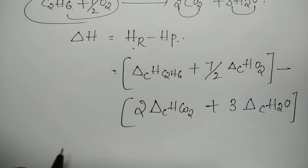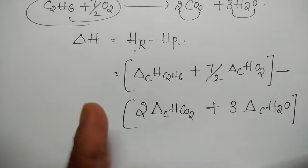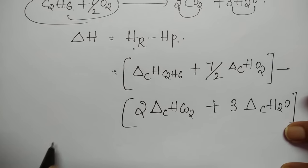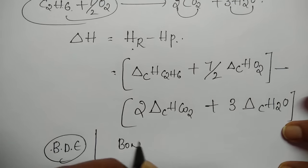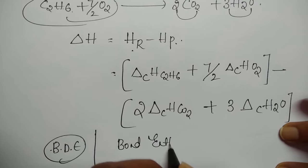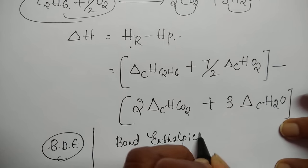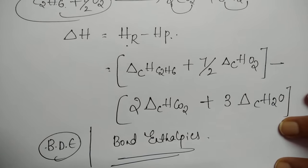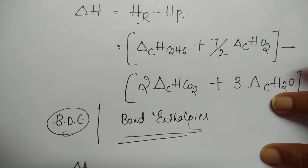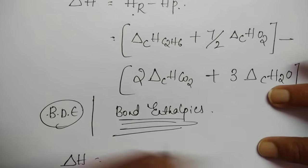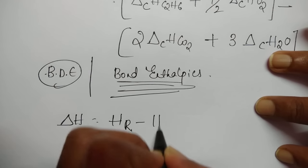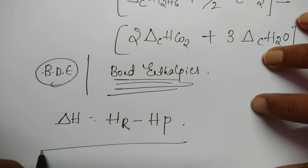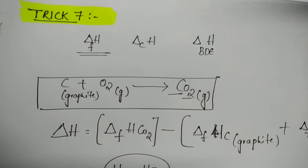For bond dissociation energy problems, the question itself will mention bond enthalpies. In those cases, the formula is also reactants minus products. Use these formulas correctly so you don't make sign errors in your calculations.